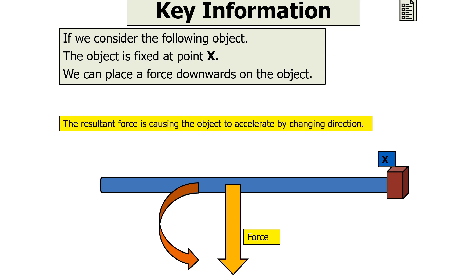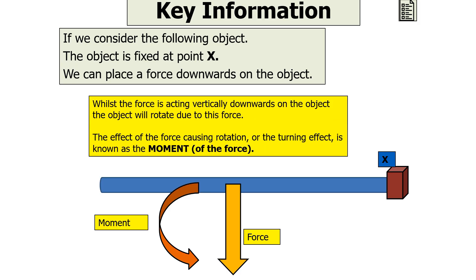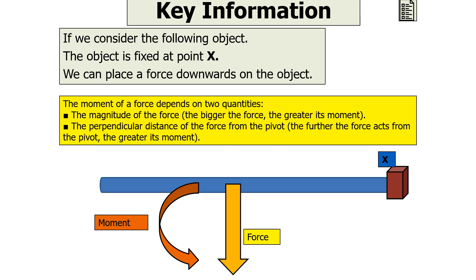The resultant force is causing the object to accelerate by changing direction. The effect of a force causing rotation, or the turning effect, is known as the moment of the force. The moment of a force depends on two quantities: the magnitude of the force — the bigger the force, the greater its moment — and the perpendicular distance of the force from the pivot. The further the force acts from the pivot, the greater its moment.